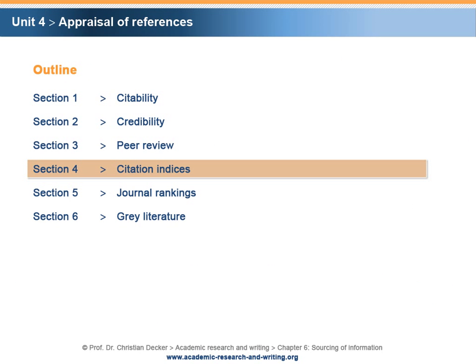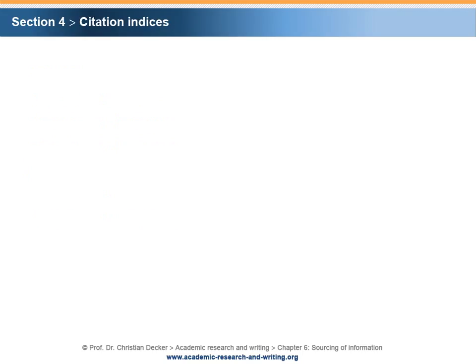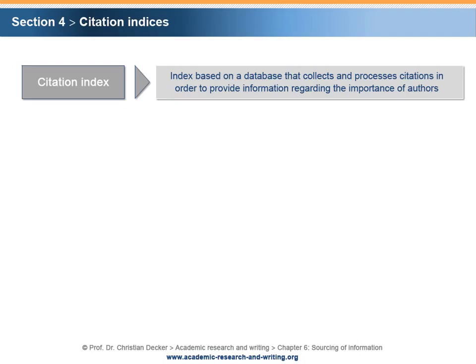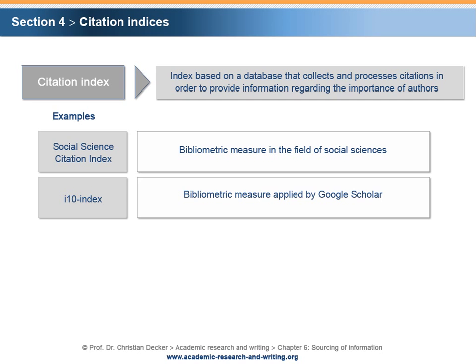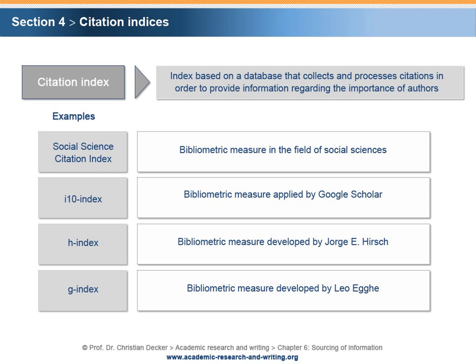Section 4: Citation Indices. A citation index is an index based on a database that collects and processes citations of authors in order to provide information regarding the importance of authors in a discipline. Examples of citation indices are the Social Science Citation Index, I10 Index, H Index, and G Index.